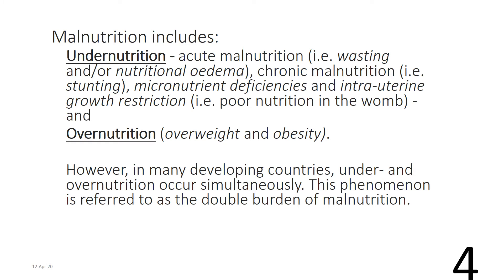Malnutrition in its broad term includes both under nutrition and over nutrition. Under nutrition is further classified into acute malnutrition and chronic malnutrition. Acute malnutrition leads to wasting and/or nutritional edema — marasmus and kwashiorkor. Chronic malnutrition includes stunting, micronutrient deficiencies, and intrauterine growth restriction. Over nutrition includes overweight and obesity, determined by the body mass index. In many developing countries, under and over nutrition can occur simultaneously — this is referred to as the double burden of malnutrition.